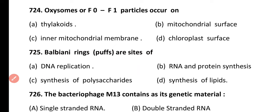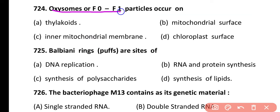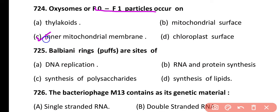Question 724. Oxysomes — F0-F1 particles — occur on: thylakoids, mitochondrial surface, inner mitochondrial membrane, or chloroplast surface. Correct answer is option C. Oxysomes are F1-F0 particles that occur on the cristae of the inner mitochondrial membrane and help in ATP production.